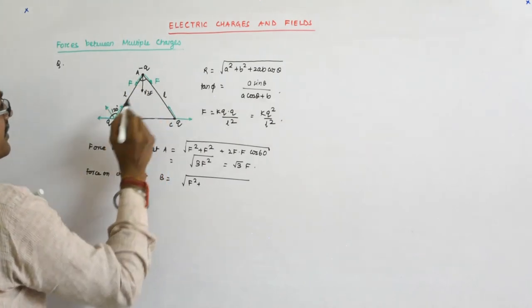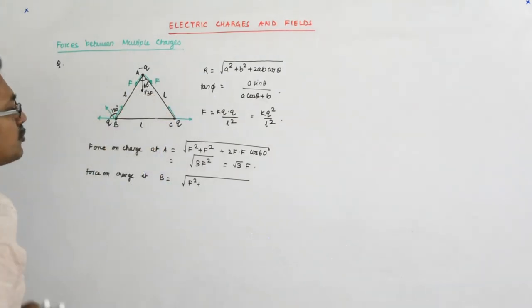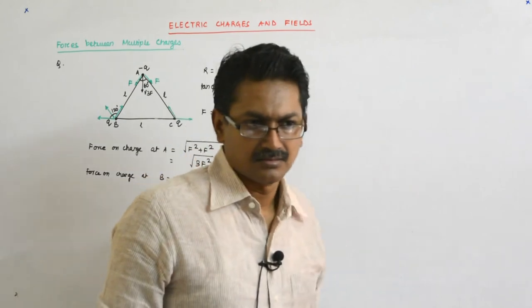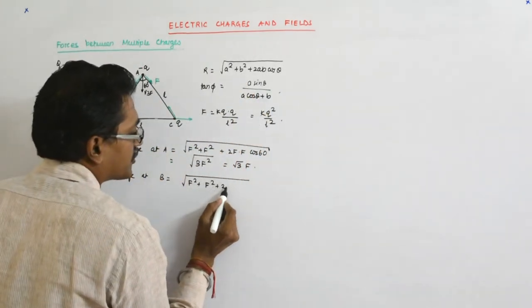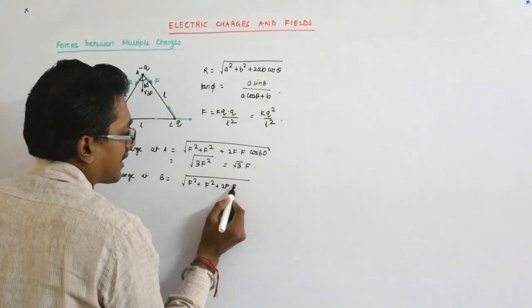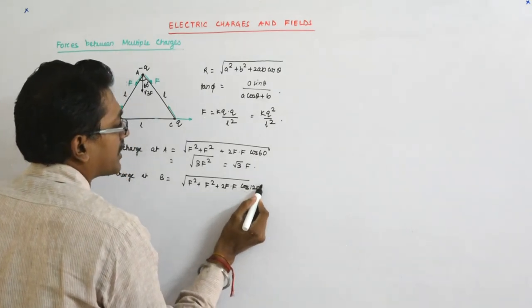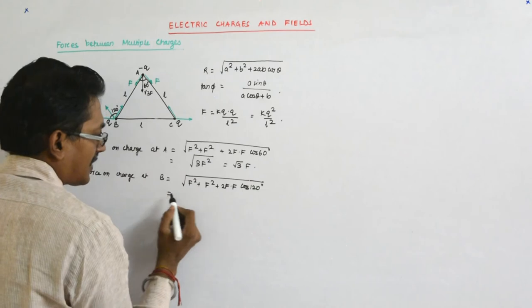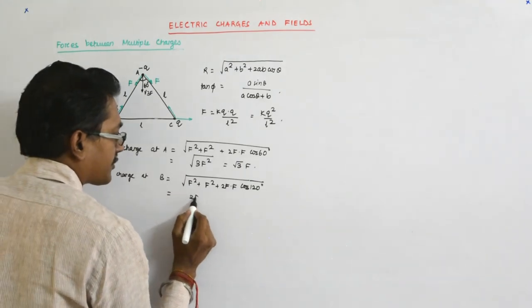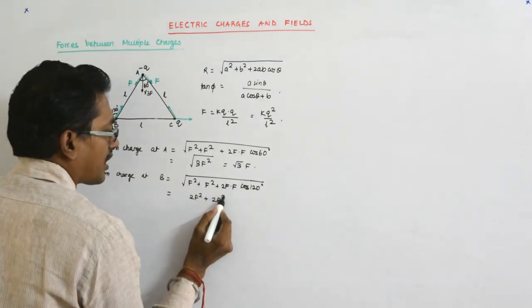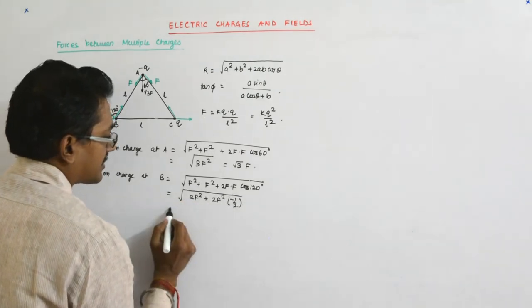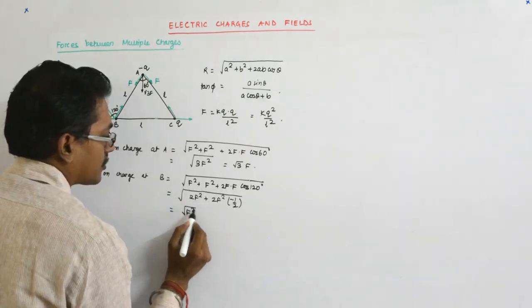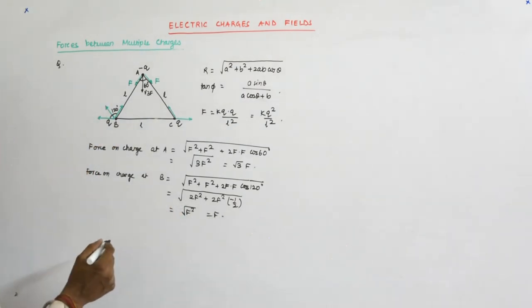Here the angle was 60 degree, the smaller of the two angles. So it is F square plus F square plus 2F into F into cos 120. So it is 2F square plus 2F square into minus half. So it is 2F square minus F square which is F square root over, which is F.